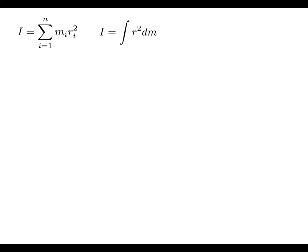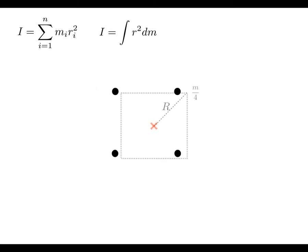Here's another example. Imagine you have a blob of putty with total mass M that you break into four bits, each with mass M/4, and place these four bits at the corners of a square. You're going to rotate this whole thing about the axis of rotation marked at the center of the square. The distance from the axis to each single mass is labeled capital R.